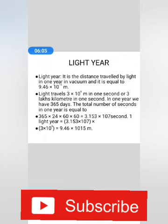The total number of seconds in one year is equal to 365 × 24 × 60 × 60, which is equal to 3.153 × 10^7 seconds. So, one light year is equal to 3.153 × 10^7 × 3 × 10^8, which equals 9.46 × 10^15 meter.